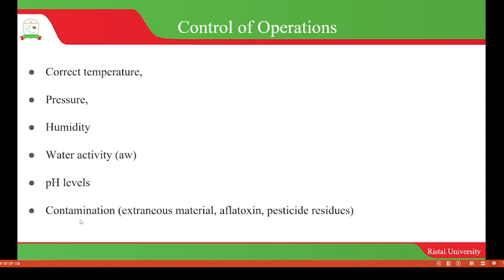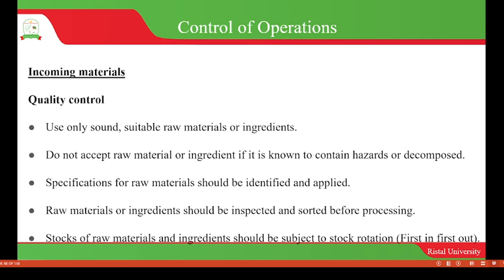We also control contamination which can result from extraneous materials, aflatoxins, pesticide residues, and so on. In the control of operations, it is always important to take note of incoming raw materials. There has to always be quality control for incoming raw materials used for processing food. We should always make sure that we use only sound, suitable raw materials or ingredients for processing food.